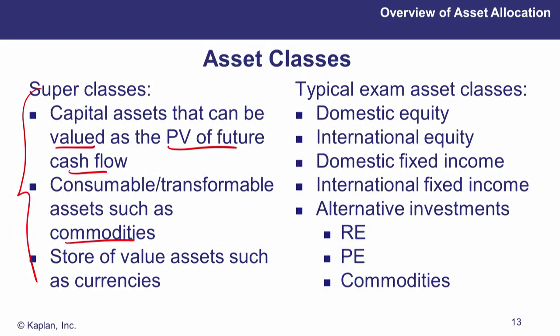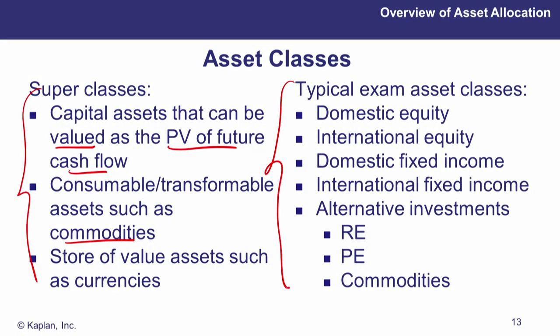Consumables or transformables include commodities like wheat, oil, orange juice, and pork bellies. Stores of value include currencies and precious metals. Those super asset classes are unlikely to be heavily examined. In the exam, we tend to look at asset classes on a more granular scale — things like domestic and international equities, domestic and international fixed income, and alternatives including real estate, private equity, and commodities — which we'll look at in more detail in later readings.